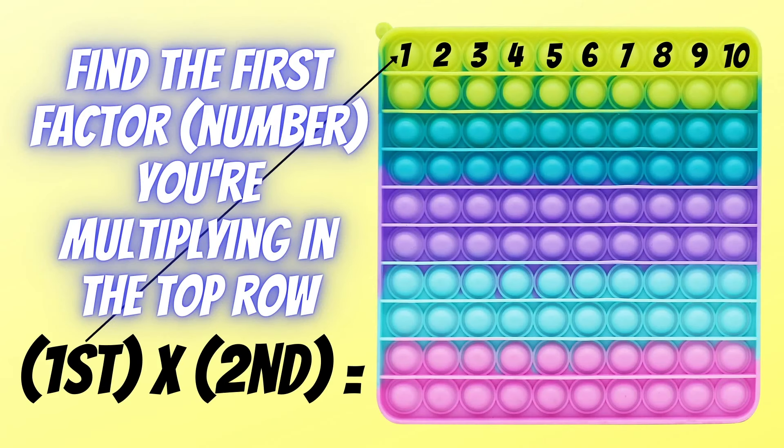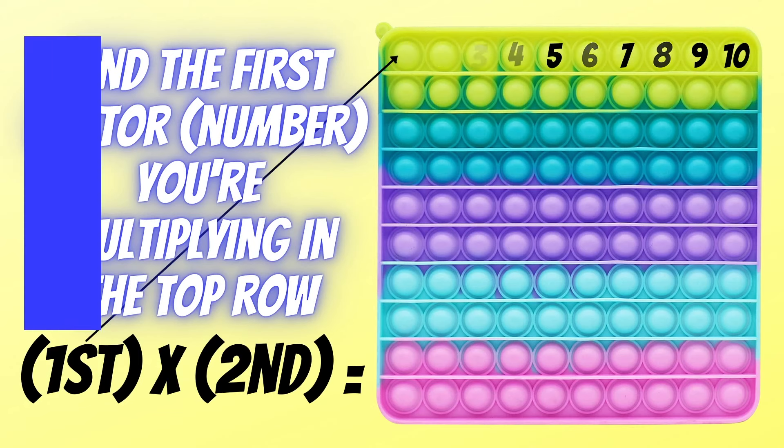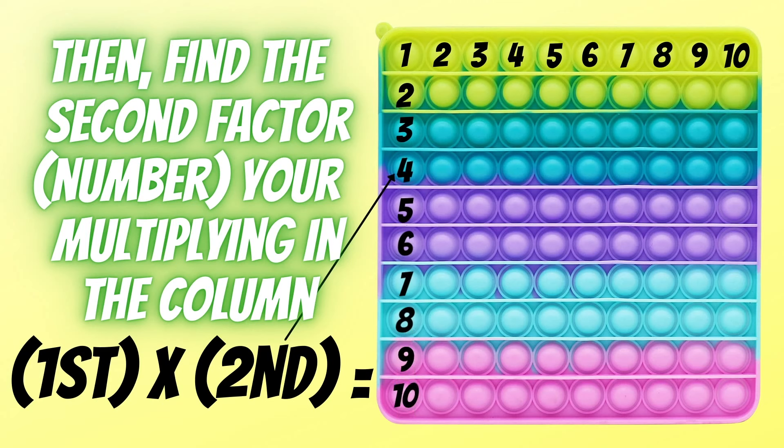Now, you have your multiplication problem, and you find the first factor or number on the top row that you're multiplying. And then, you find the second factor or number you're multiplying in the column.